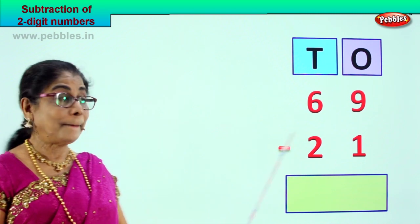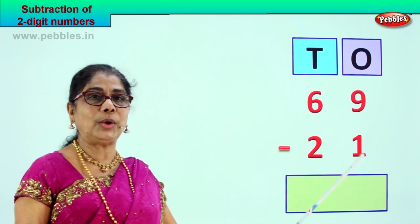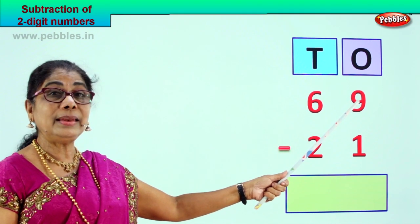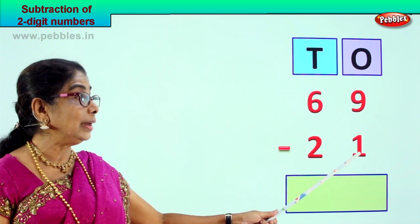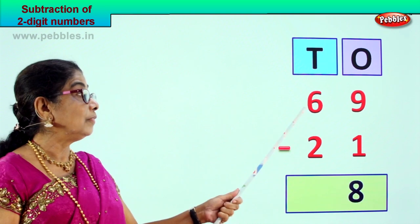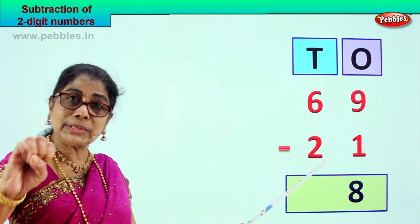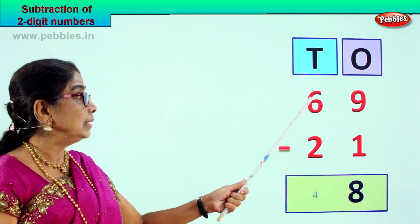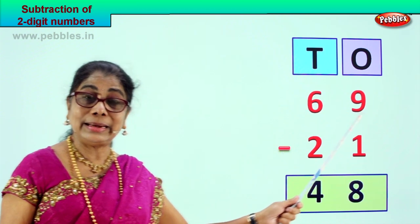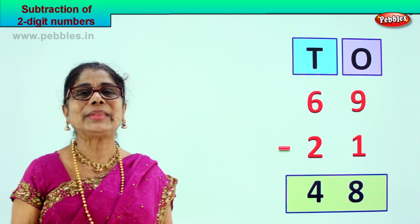Sixty-nine minus twenty-one. Six tens, nine ones minus two tens, one one. Sixty-nine take away twenty-one. Let's go to the ones place: nine minus one. Nine take away one is eight. From the tens: six take away two — two, three, four, five, six — that is four. Six minus two is four. Your answer is forty-eight. Sixty-nine minus twenty-one gives you the answer forty-eight.